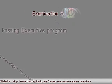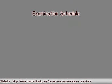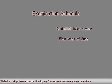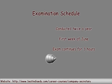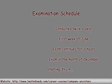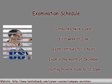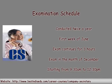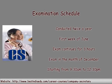Examination schedule for the company secretary program: examinations are conducted twice a year. The dates are announced some days before the designated dates. These dates generally are not changed, but in special cases dates may change. The tentative time of the examinations is as follows: the first exam is conducted during the first week of June. This exam continues for three hours, starting from 9:30 in the morning and continuing till 12:30 p.m.